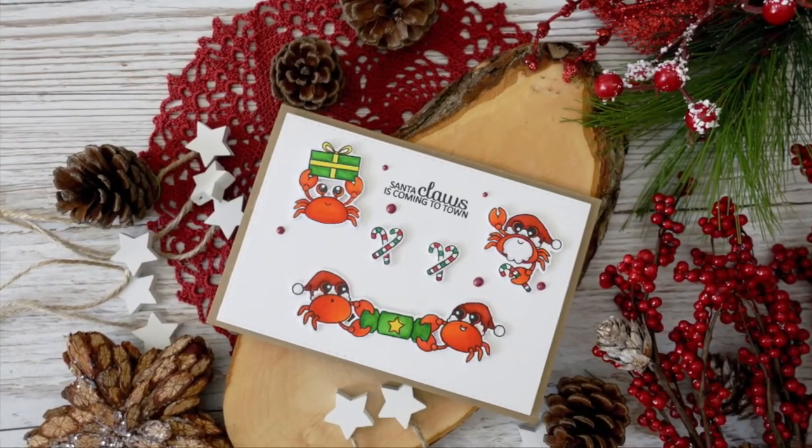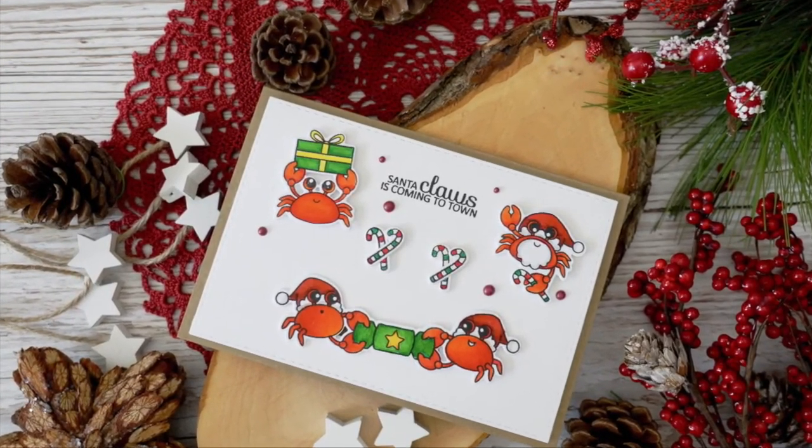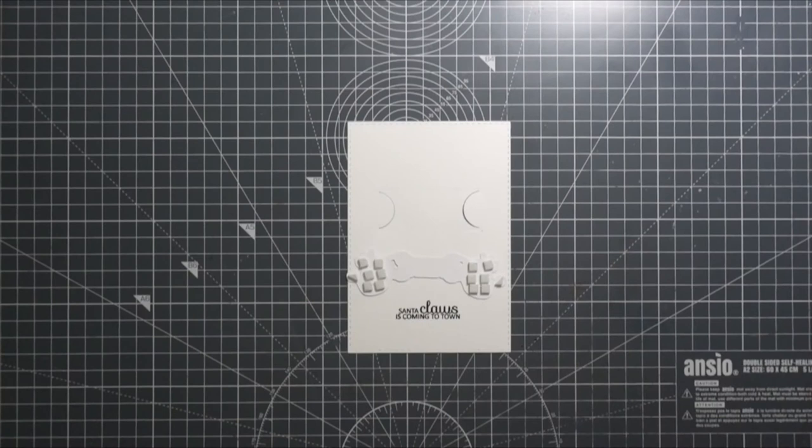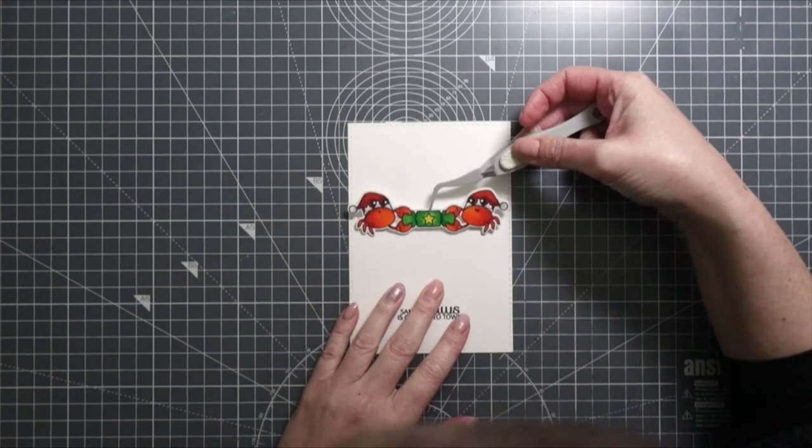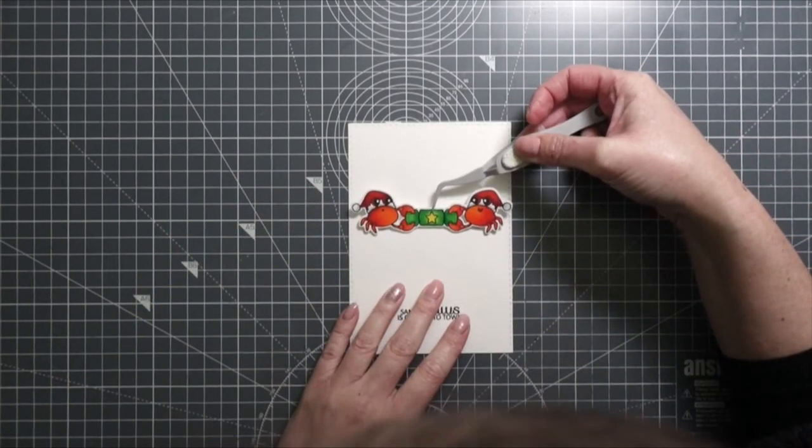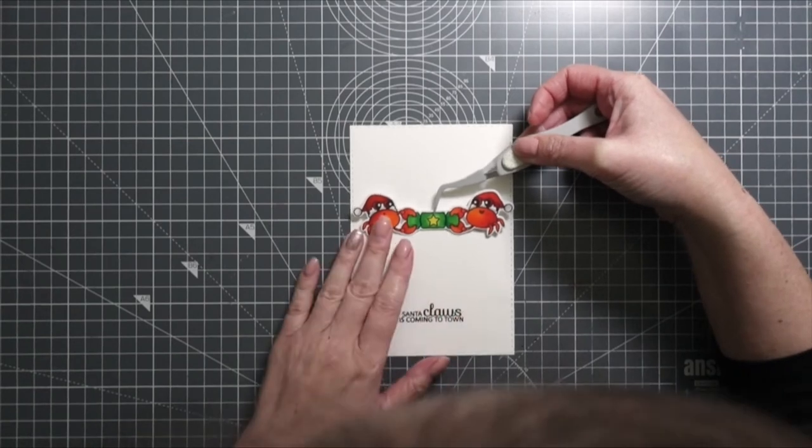If you watched my video, card number five, I used the Crabby Christmas stamp set from Clear and Besotted. I thought the crabs fighting over the Christmas cracker would be perfect on this card as well, so I decided to try it out, and I really like it.